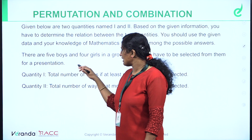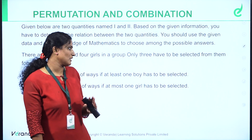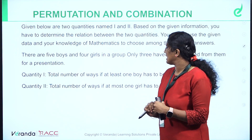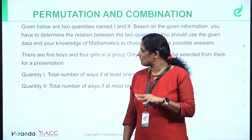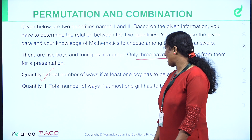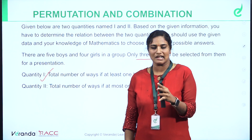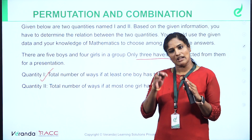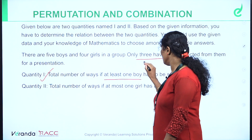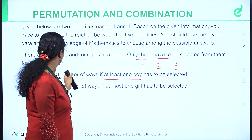The question is simple: there are 5 boys and 4 girls in a group. Only 3 have to be selected for a presentation. We need to find the number of ways if at least one boy has to be selected. At least one boy means: one boy, two boys, or three boys. We calculate these three conditions.